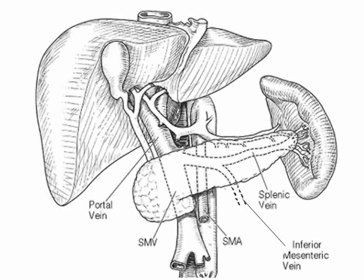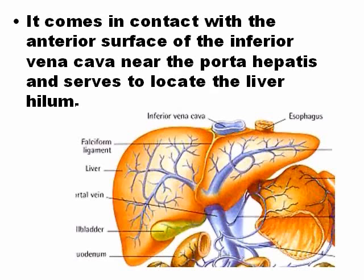The portal vein runs together with the hepatic artery and the bile ducts. It comes in contact with the anterior surface of the inferior vena cava near the portal hepatis and serves to locate the liver hilum.